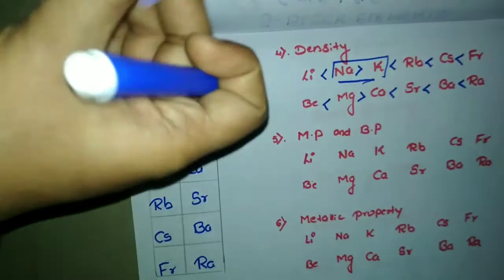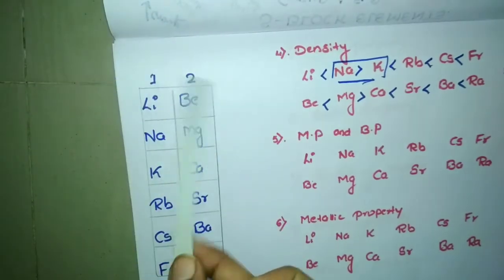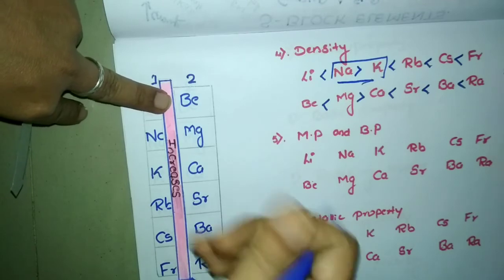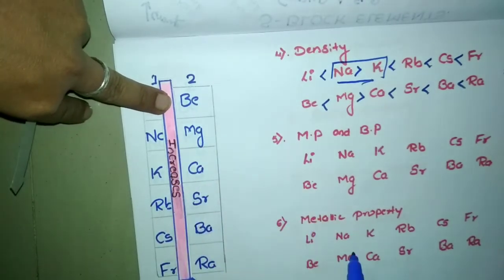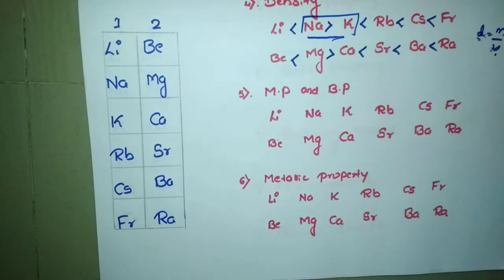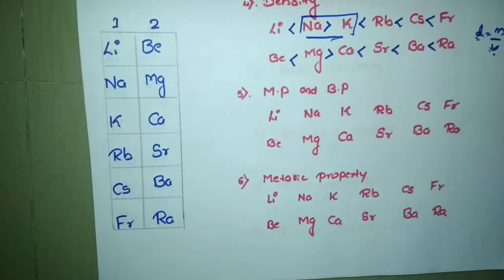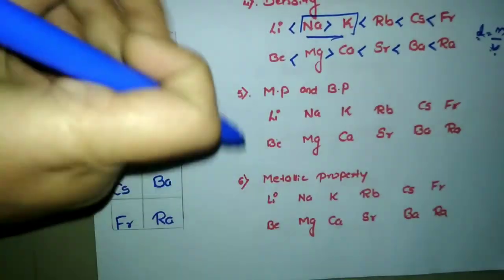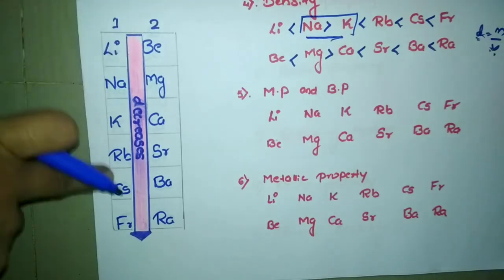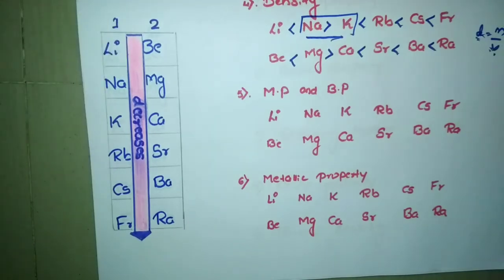So the trend is: as we go down the group there is an increase in density, except for the cases between sodium and potassium, and between magnesium and calcium. The same explanation applies to the magnesium-calcium pair. Now let us move to melting point and boiling point. There is a gradual decrease in melting and boiling point as we go down the group.